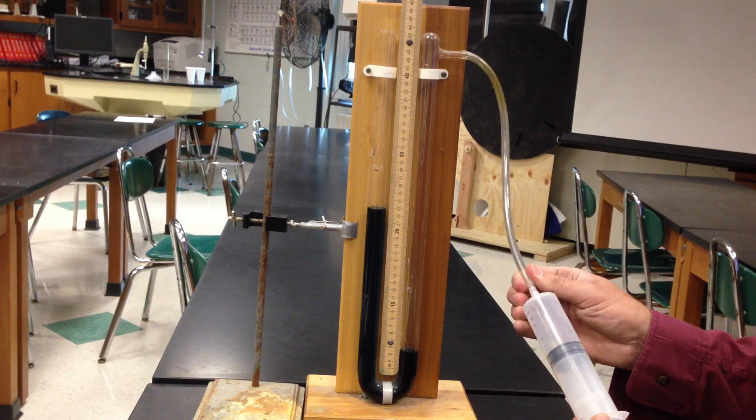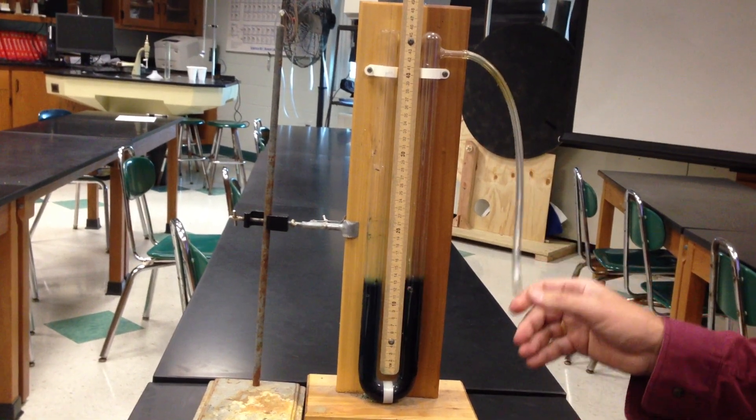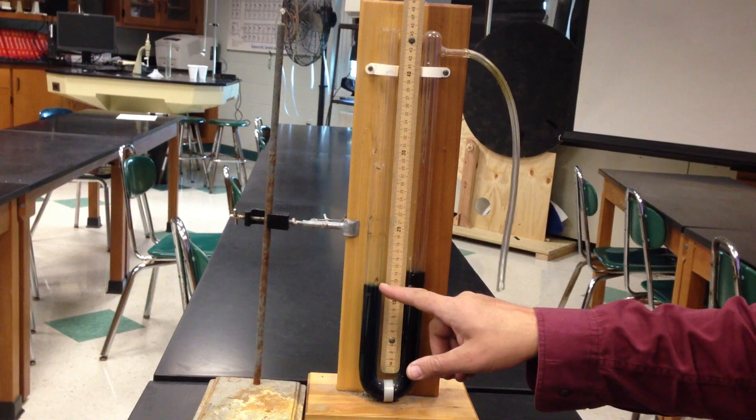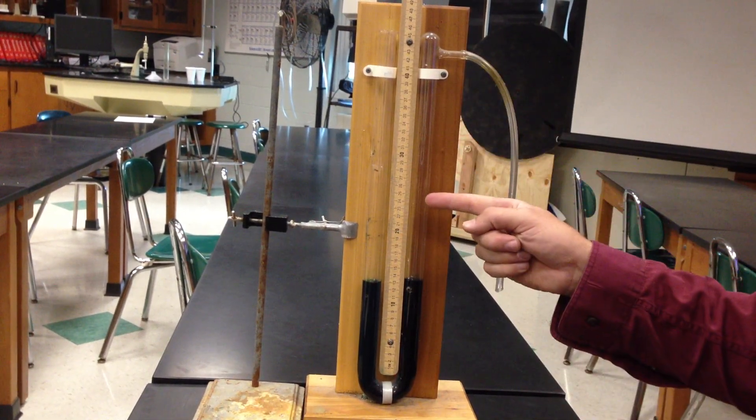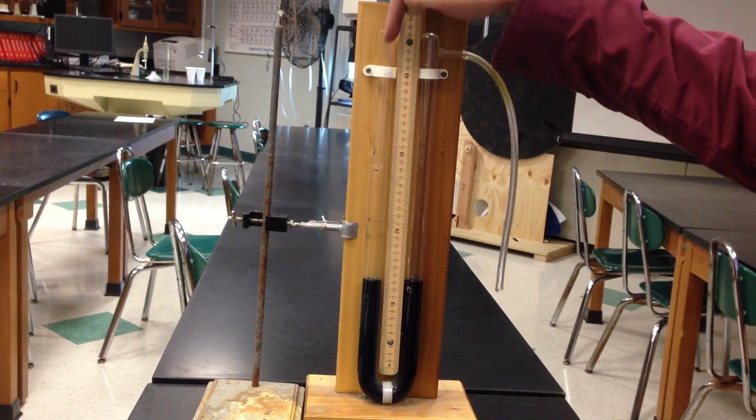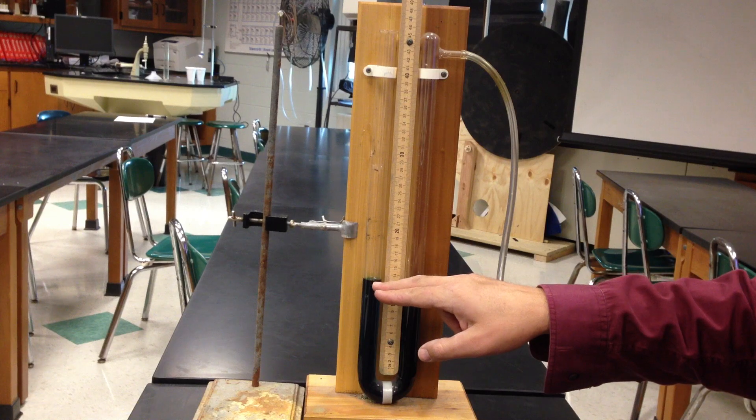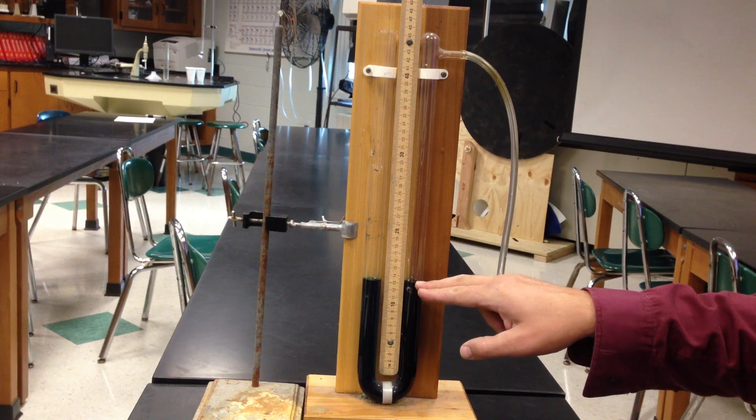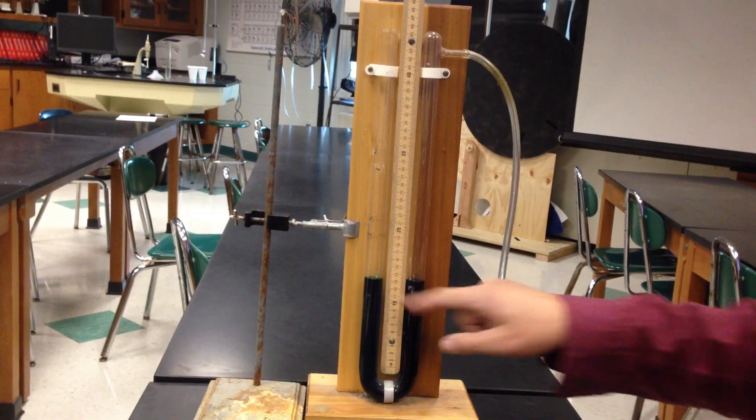When the pressure was equal, these levels were equal because the pressure in the inside of this tube is equal to the pressure pushing down in this open container. So the force on this liquid level is the same as the force on this liquid's level, and thus you have equal pressure.